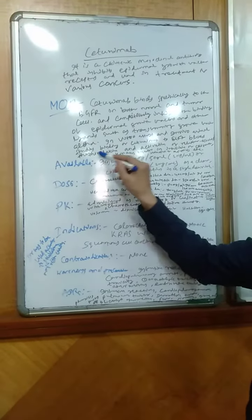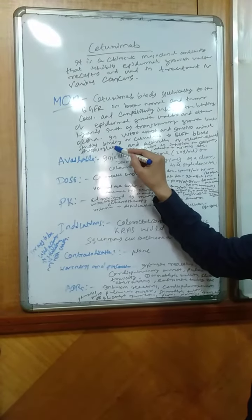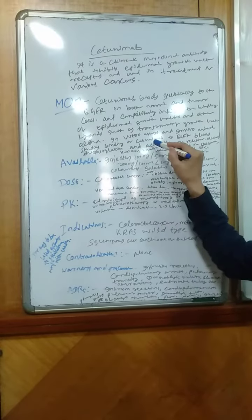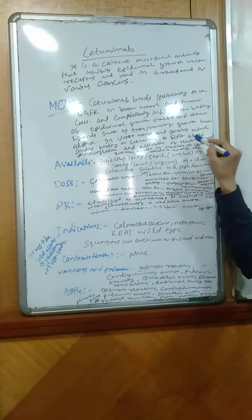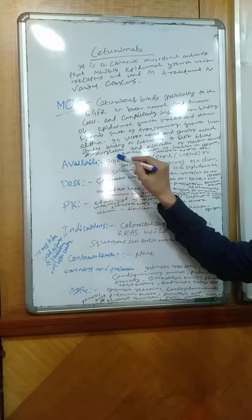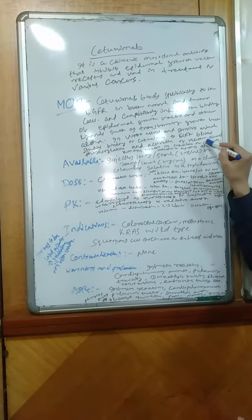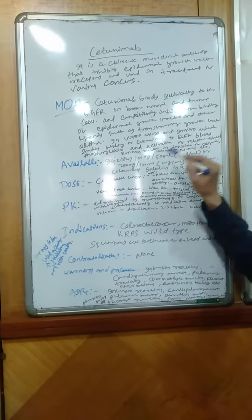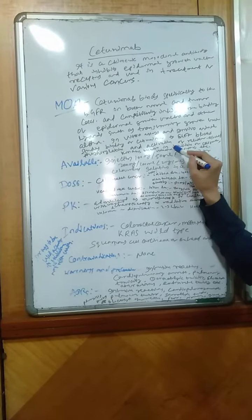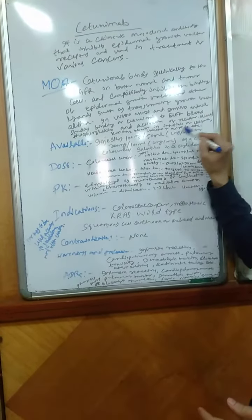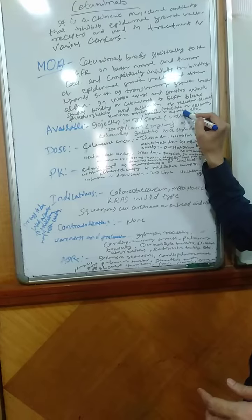And in vitro assays and in vivo animal studies, binding of Cetuximab to EGFR blocks phosphorylation and activation of receptor-associated kinases, resulting in inhibition of cell growth, induction of apoptosis, etc.